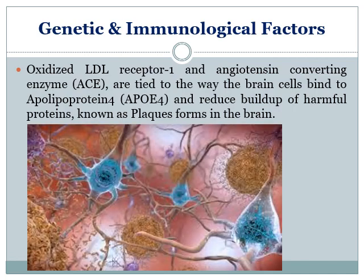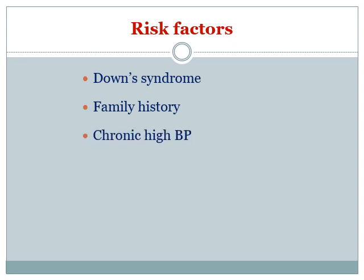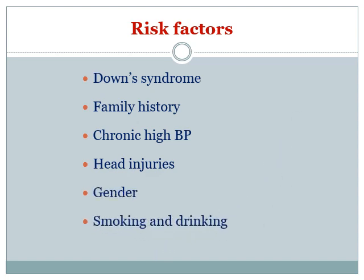In this picture, the formation of plaques deposited in brain neurons is shown, which further leads to the progression of Alzheimer's disease. Other risk factors that may induce neuronal degeneration include Down syndrome (trisomy 21), a genetic disorder caused by the presence of all or part of a third copy of chromosome 21, associated with physical growth delays and mild to moderate intellectual disability. Additional risk factors include family history, chronic high blood pressure, head injuries, gender, and habitual smoking and drinking.